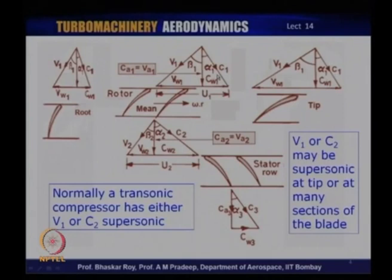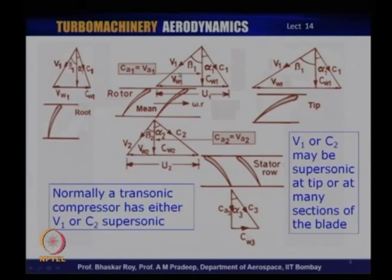On the other hand, it is entirely possible that as the flow comes through the rotor and then the stator, the flow acquires supersonic velocity at entry but then transits to subsonic. V2 is substantially lower than V1, so it is entirely possible that V1 is supersonic and V2 — the exit velocity from the rotor — is subsonic. Then C2 could be subsonic, and hence the entire flow in the stator could be subsonic.